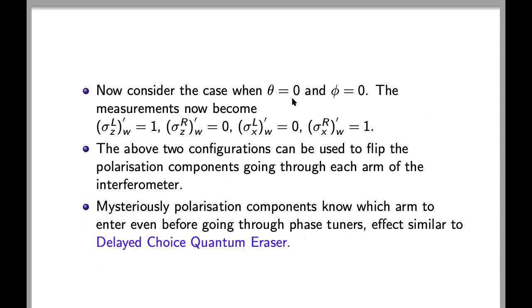Now consider the case when theta is equal to zero and phi equal to zero. The measurements now become this, so in this case you can see that the z component goes to the left arm and the x component goes to the right arm. The above two configurations can be used to flip the polarization component going through each arm of the interferometer.